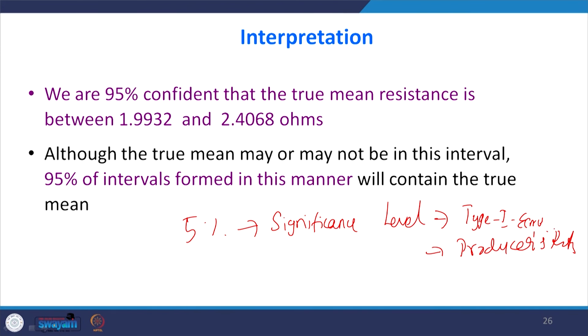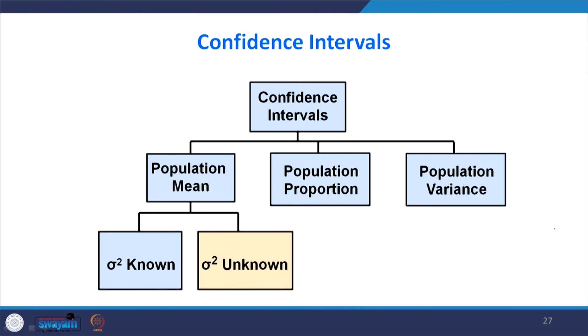To summarize: we have seen what is a point estimate, what is an interval estimate, the advantage of interval estimates, the meaning of confidence level, and the confidence interval formula. We covered how to predict the confidence interval for a population mean when sigma squared is known. In the next lecture, we will predict the confidence interval for the population mean when sigma squared is unknown.